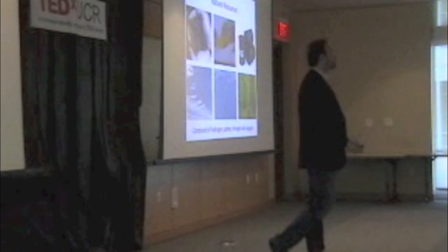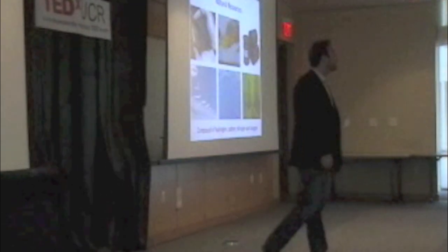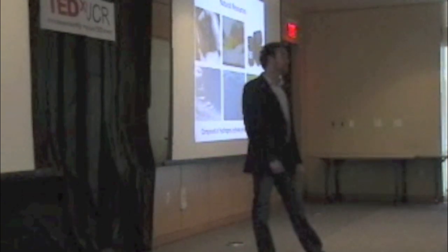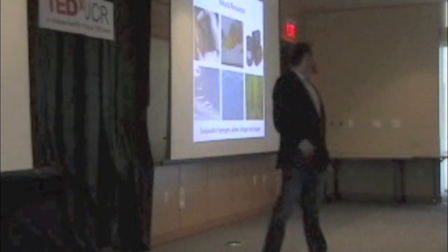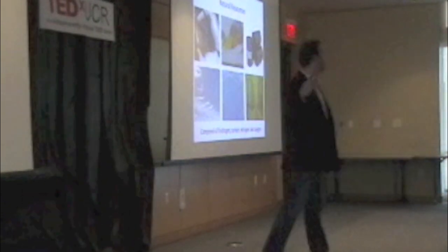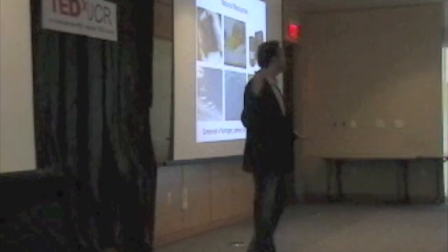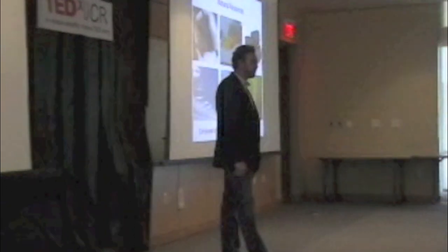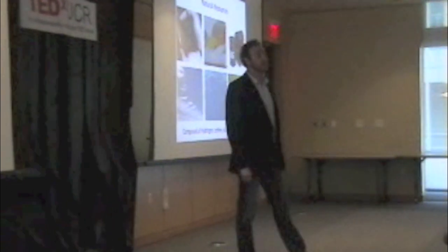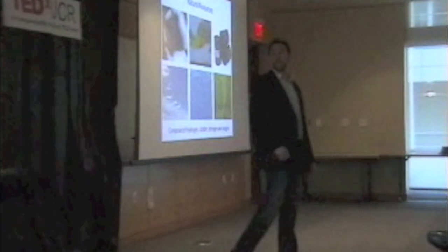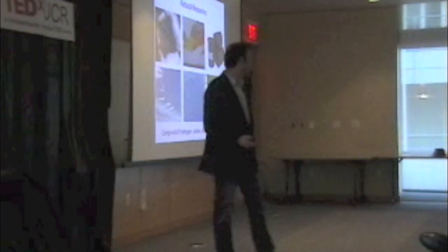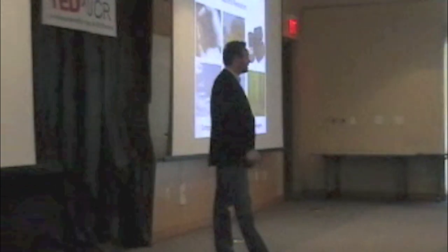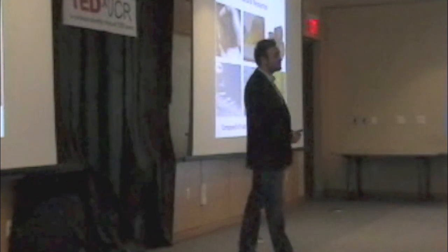These are basically our fossil resources. We call them fossil resources because they're produced through the decomposition of organic species that have existed on Earth for about the past billion years. Basically all the plants and animals that have lived on this Earth die, they decompose, they're compressed down, and they form these natural resources such as coal, natural gas, and oil.